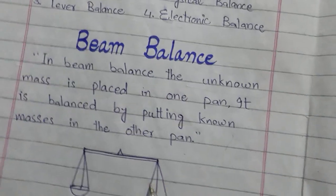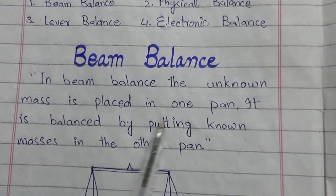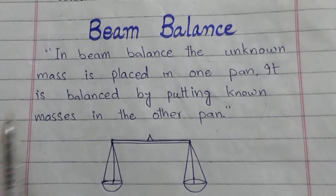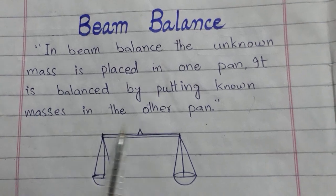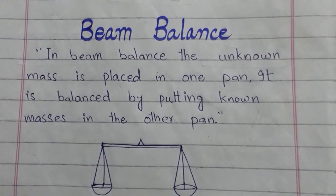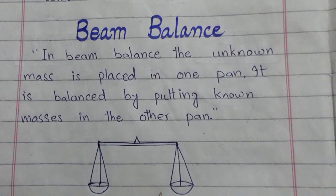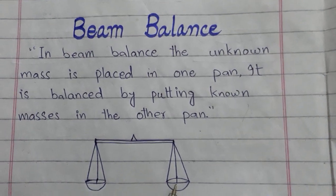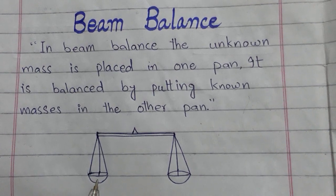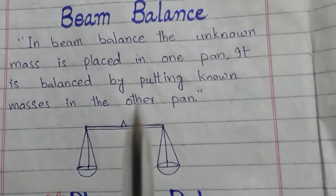The first is the beam balance. In beam balance, the unknown mass is placed in one pan, and it is balanced by putting known masses in the other pan. We keep a known mass, say 1 kg, and then place sugar of 1 kg on the other side. It will be equal when the two pans balance. So we call this beam balance.